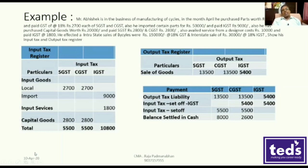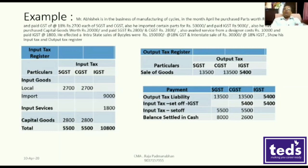So in April, the SGST is Rs. 5,500. SGST is Rs. 5,500. IGST is Rs. 10,800. The total input tax is Rs. 5,500 of SGST, Rs. 5,500 of CGST, and Rs. 10,800 of IGST. These are the input tax figures.